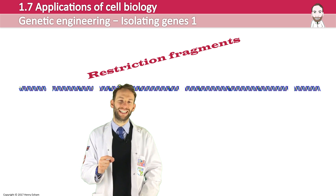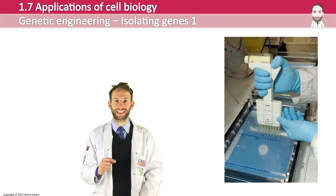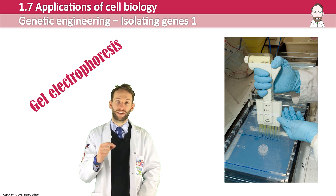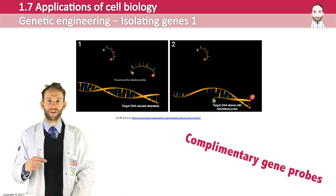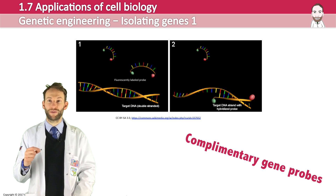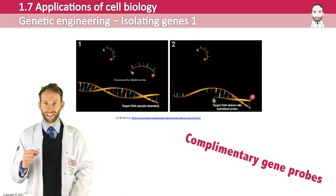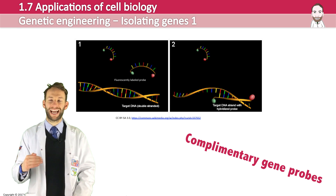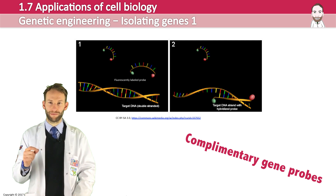How do we work out which one of these restriction fragments is actually the gene we want? We can use a technique to separate these fragments according to their length called gel electrophoresis, which will be explained in more detail later. When they are separated and the correct fragment is identified, we can use something called complementary gene probes. These probes are complementary to the sequence in that gene only, so they will only bind to that specific gene. Since the gene is double stranded, the hydrogen bonds must first be broken — it needs to be denatured — then the probe is added, binds to the complementary area, and confirms the gene.